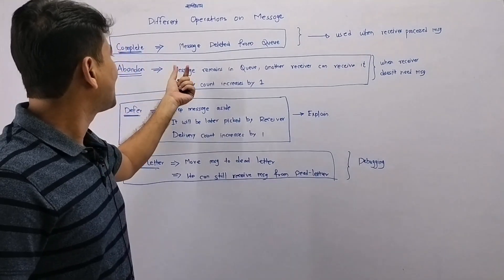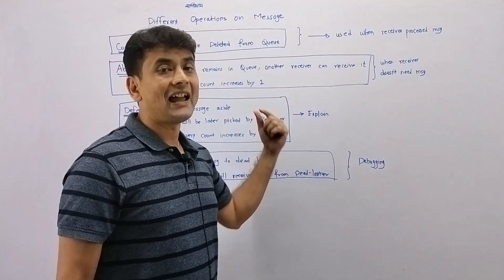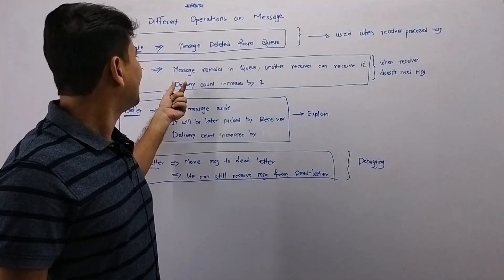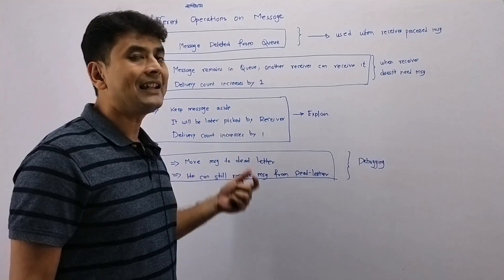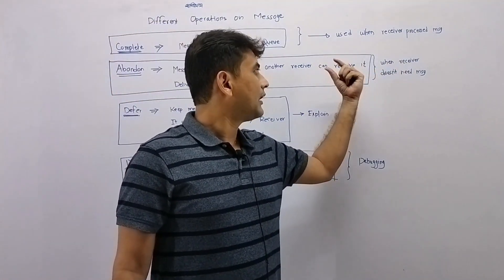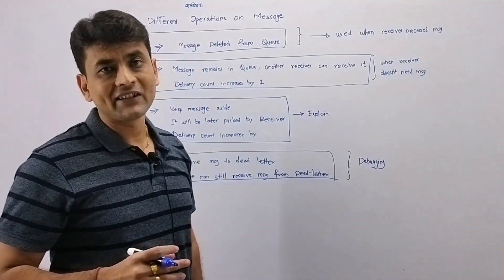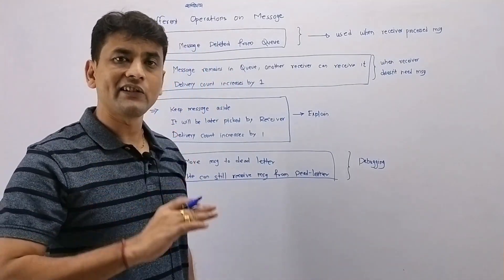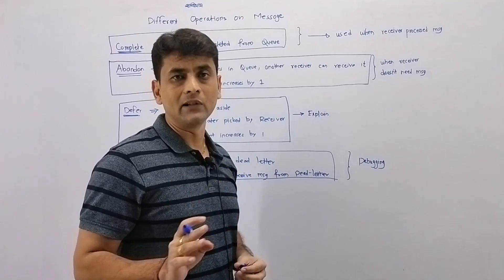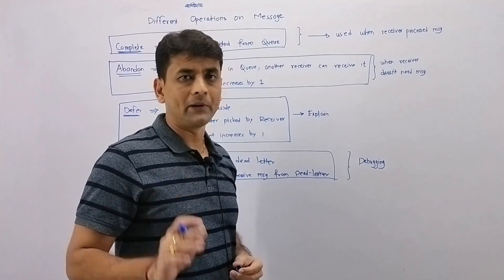When a receiver abandons the message, the message remains in the queue and it's available for pickup for another receiver. In that case, the delivery count will increase by one. A receiver can abandon the message when he has received that message and then realizes that he doesn't need the message anymore.